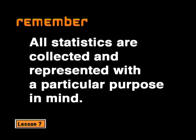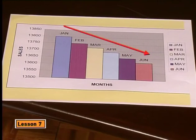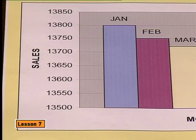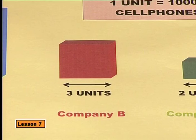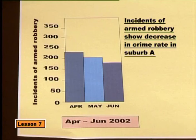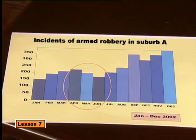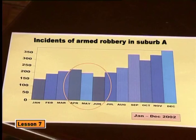Shall we recap on what we noticed this lesson? Firstly, we need to remember that all statistics are collected and represented with a particular purpose in mind. Just as there can be bias in collecting data, so the way data is represented can also be misleading. We found that the scale of the axis can cause problems — one of which is the slope of the graph. By stretching or compressing the scale of the vertical or horizontal axis, we can modify the slope to create an exaggerated impression of rapid or slow growth. Another clever trick is to use three-dimensional effects to mislead readers into believing that differences are bigger or smaller than the real data. We also discussed how selecting only part of a graph can mislead readers by excluding negative information. Finally, when we have old data, it's possible that we will draw conclusions that do not apply to the present situation.